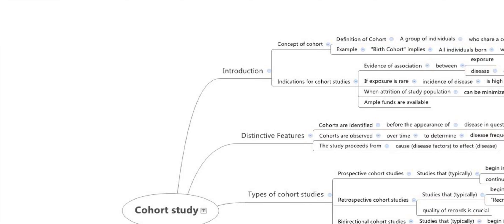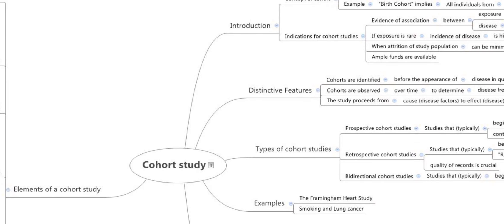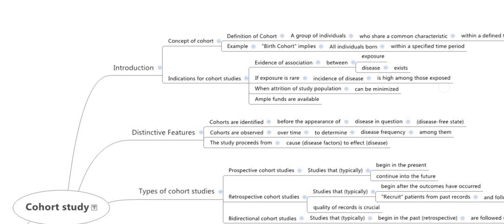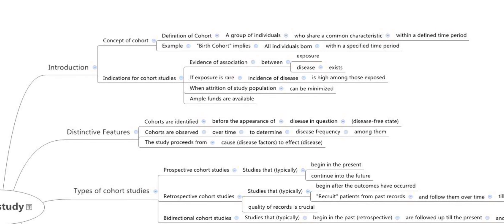Study designs is another important topic which you have to know before your examination — it is a must-know topic. Among these, cohort studies and case-control studies are very frequently asked. Today we will be looking at cohort study. It comes under analytical study design. The definition of cohort is a group of individuals who share a common characteristic within a defined time period. For example, a birth cohort implies all individuals born within a specific time period.